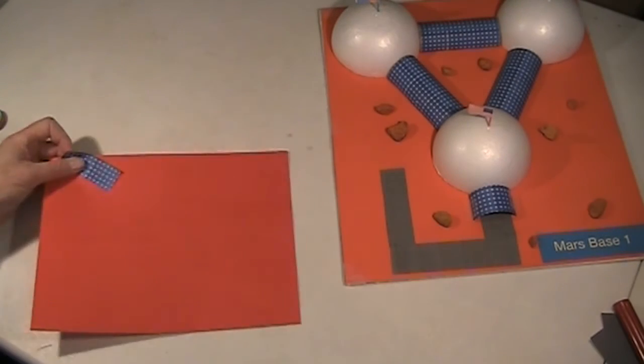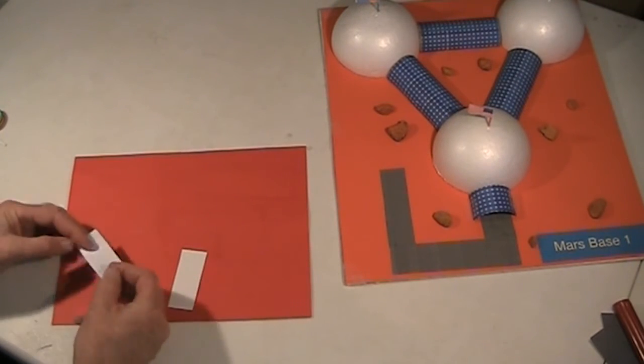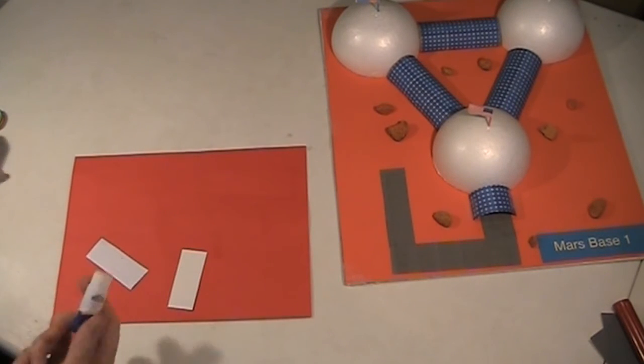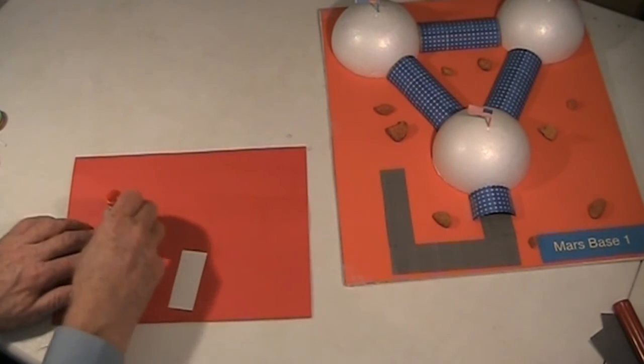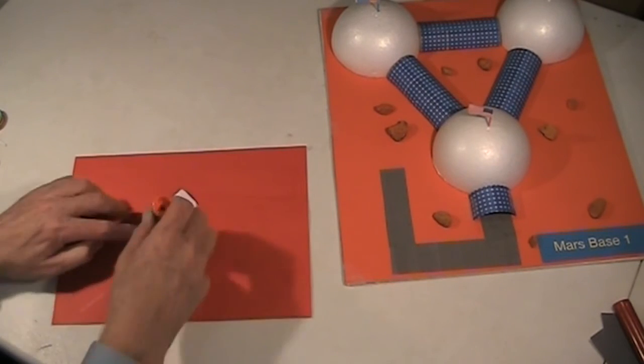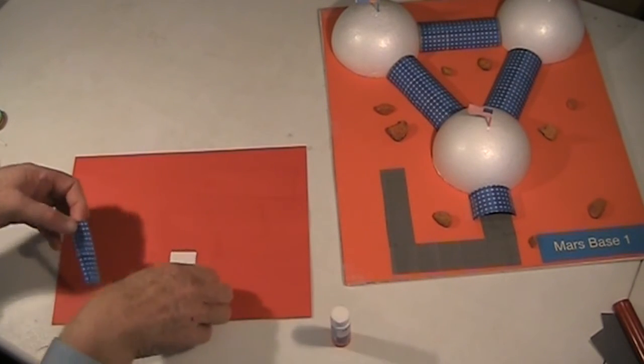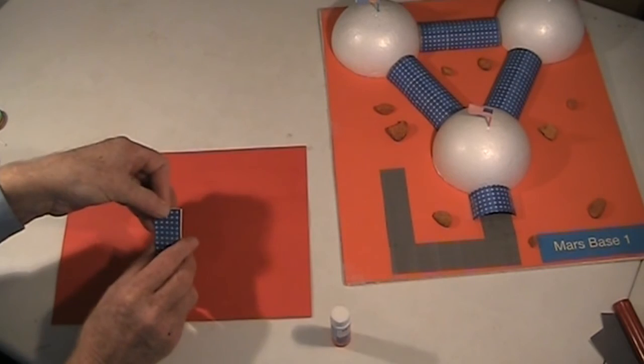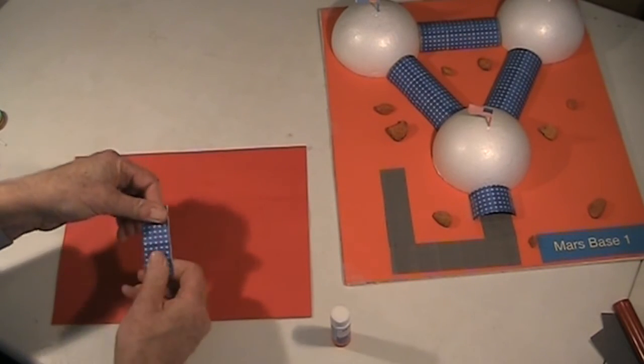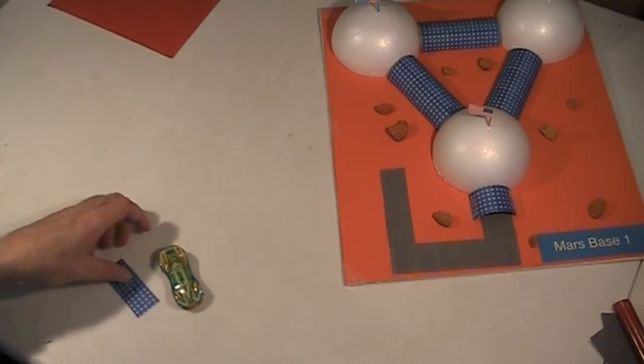All you need to do is print out another sheet of the solar panels. Cut out a small piece about the size of the car that you have and also cut out a small piece of cardboard about the same size. Just put the solar cell on top of that little piece of cardboard and now we'll attach it to the Hot Wheel.